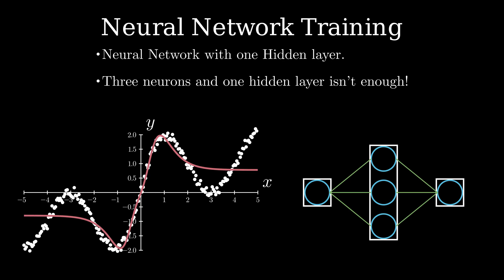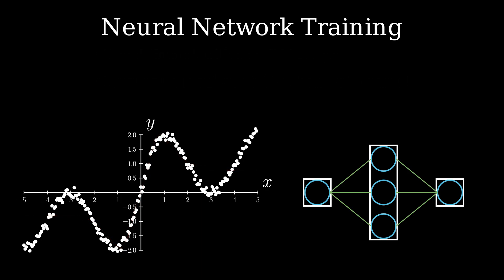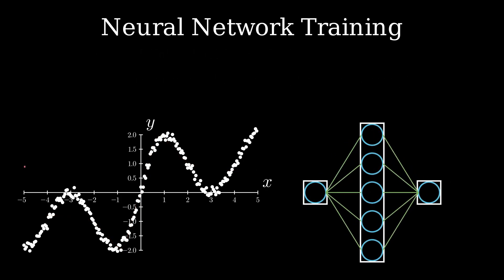The amazing thing about neural networks is that we can make this work with very few changes. Let's increase the number of neurons in the hidden layer to five. The results are much better now as we have a model with a higher number of parameters to fit the same dataset.